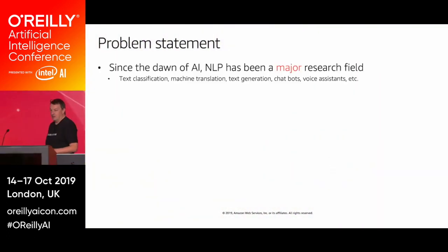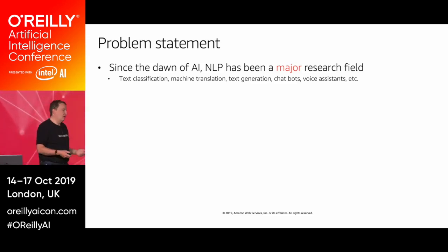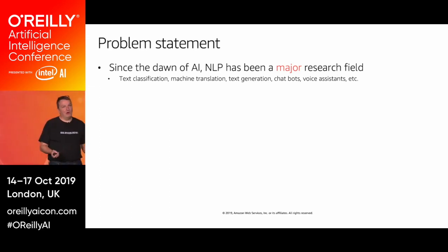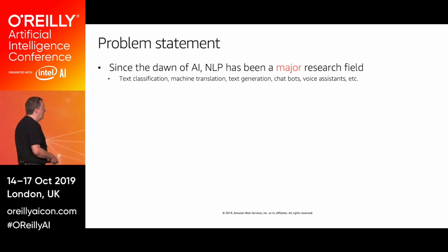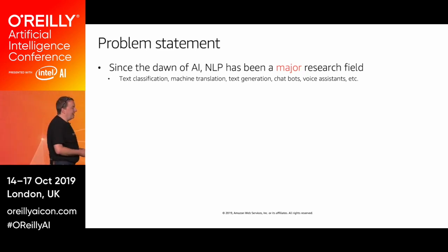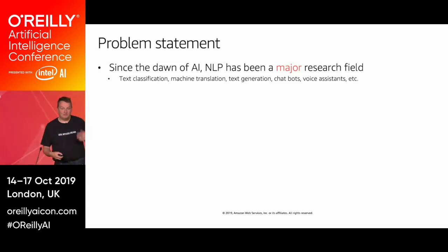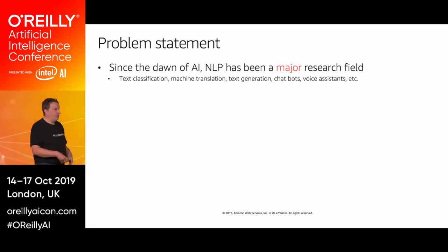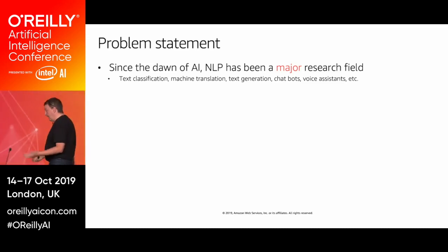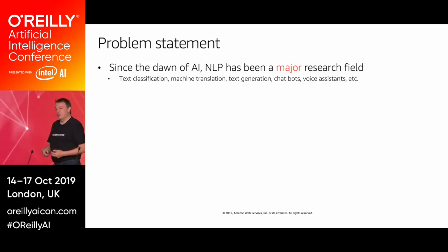The problem statement is this: NLP has been around forever — it's just as old as AI is. There's been a lot of focus on computer vision and CNNs for the last few years, and those are nice and fun. But NLP is at least as important because it lets us do things like text classification, translation, text generation, chatbots, voice assistants — everything that involves speech and language, which is very central to what humans are.